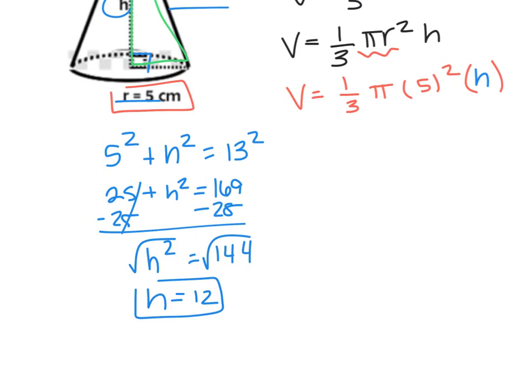And again, we just type this into our calculator. So I'm going to retype one-third times 5 squared times 12, and I get 100. So volume equals 100π centimeters cubed.